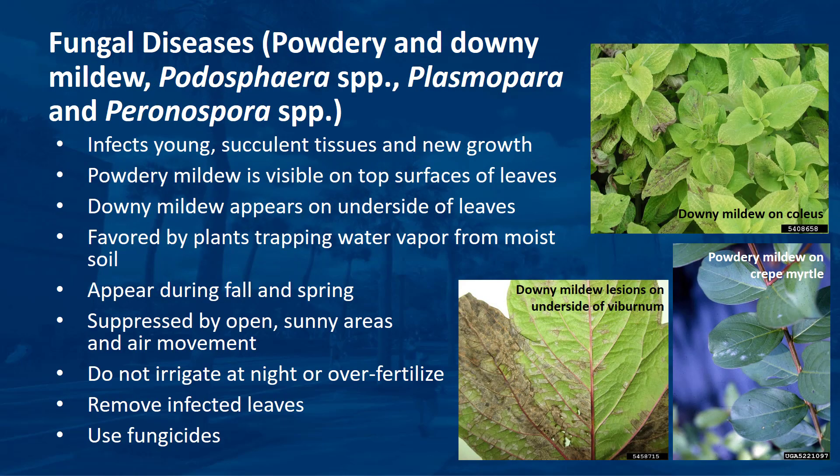Powdery mildew infects young succulent tissues and new growth — water sprouts on the main branches of plants — and covers entire plant surfaces, visible on the top surfaces of leaves. Downy mildew also favors young succulent tissues; however, it appears only on the underside of leaves. Plants trapping water vapor from moist soil surfaces create favorable conditions. Mildew diseases usually appear during fall and spring when humid periods accompany cool nights and warm days. Powdery mildew can be suppressed by planting in open, sunny areas, allowing air movement, not irrigating at night, not over-fertilizing, and removing infected plant parts.